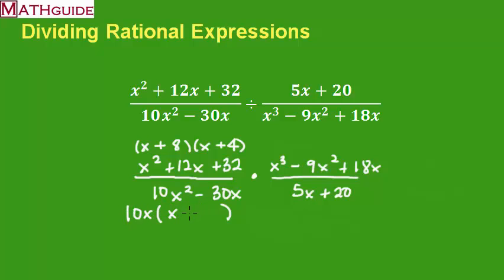There'll be an x. 10 times 3. 10x times 3 is 30x, so it all works there. So we factor that out. Here we're going to divide by 5. So we're going to divide by 5. What do we get? We get x plus 4. Divided everything by 5.